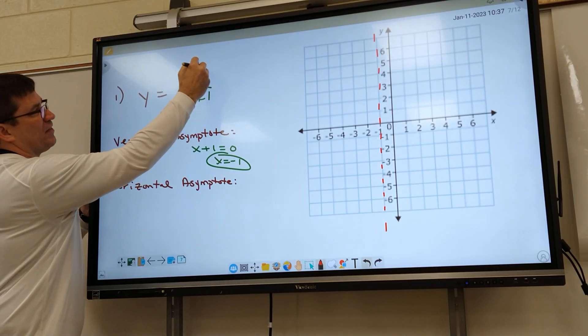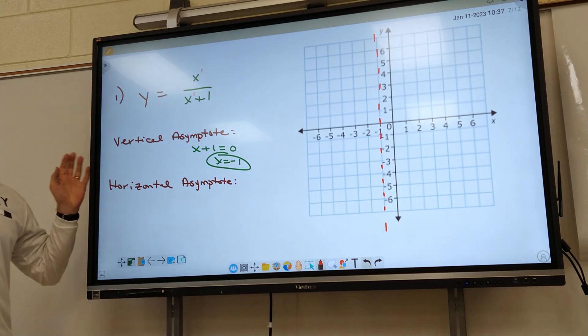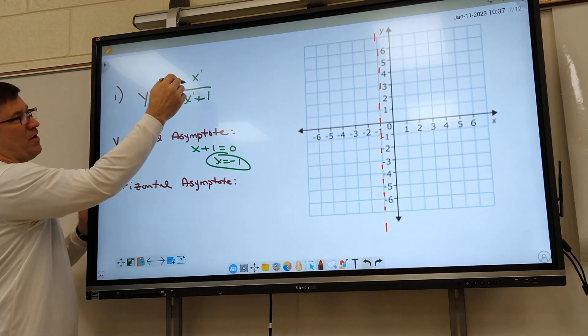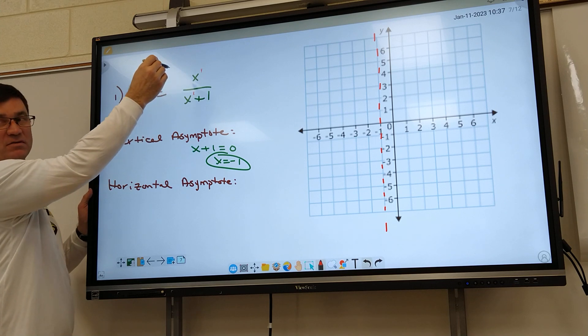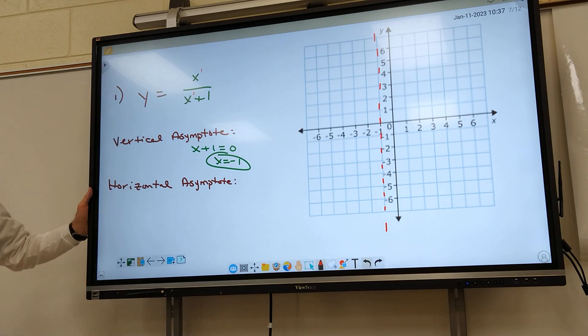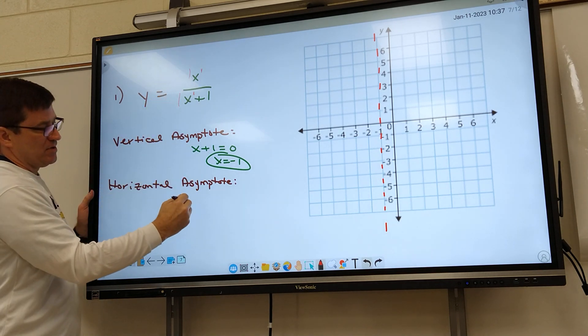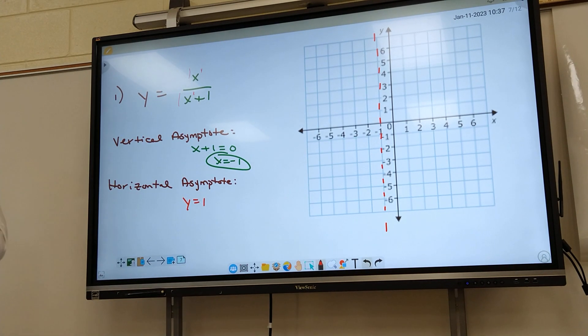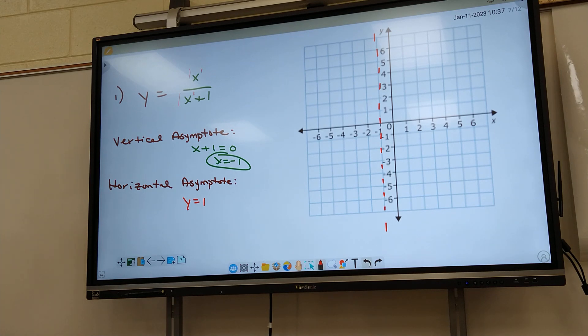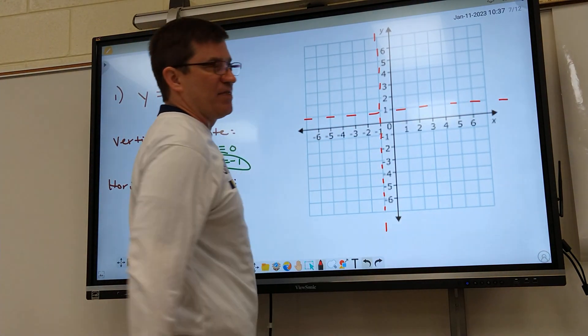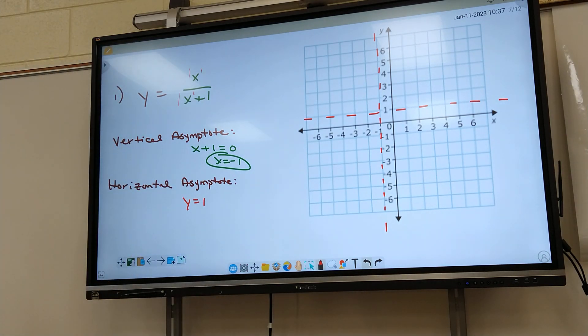Y'all see how that exponent's a one and that's a one. It's understood to be a one if you don't see anything. When the exponents are equal, y'all have to divide the numbers in front, you've got to divide the coefficients, the number in front of the x's. So what's one divided by one? That's y equals one. So my horizontal line, going side to side, is at positive one. Looks like that.